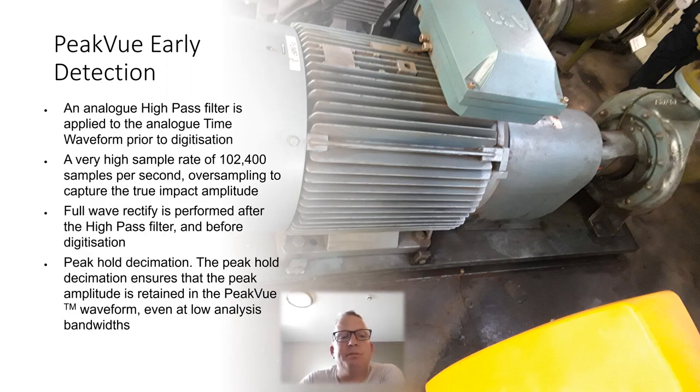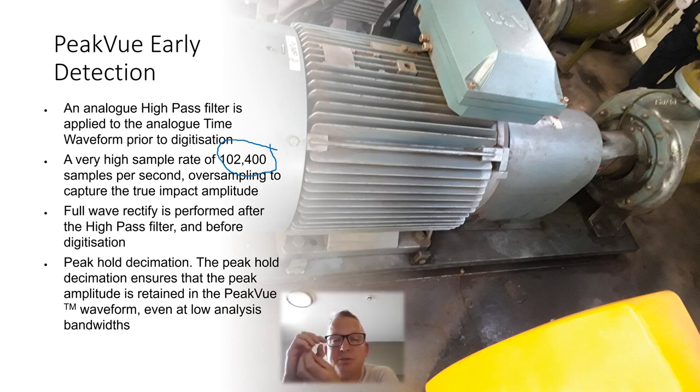Very basically we've got analog high-pass filter applied to the analog time waveform part of the decialization. The bit which sets them apart is this bit here, is where it actually has a sample rate of 102,400. So the analyzer is sampling so fast that it's going to capture these very, very short, transient, minute shock pulses from the bearing.